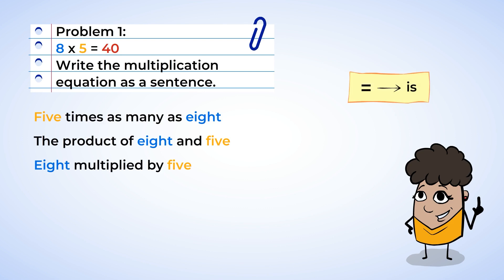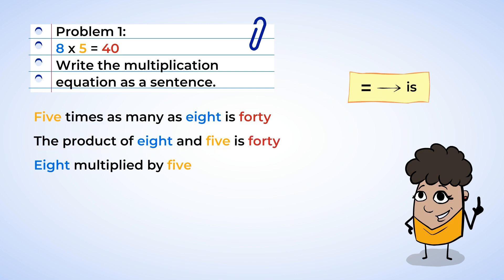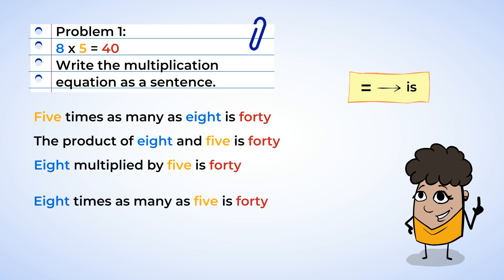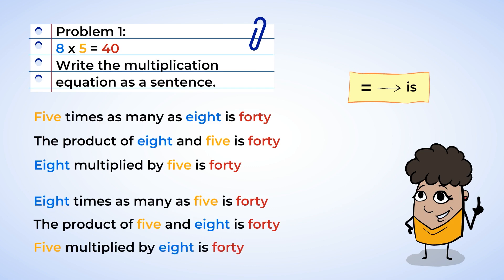Now we can start putting all this together. Five times as many as eight is 40. Or the product of eight and five is 40. Or eight multiplied by five is 40. Don't forget that we can also switch the order of the numbers because multiplication is commutative. That means we can also say eight times as many as five is 40, the product of five and eight is 40, or five multiplied by eight is 40.